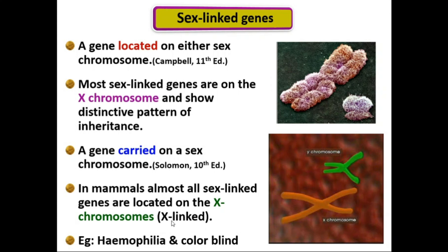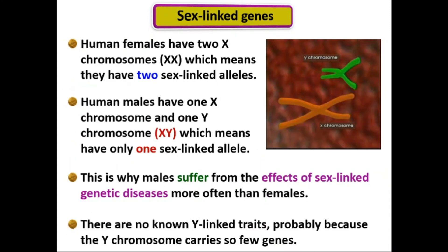Two genetic conditions that serve as examples of sex-linked genes are hemophilia and colorblindness. When discussing sex-linked genes, we compare males and females. Human females have two X chromosomes, meaning they have two sex-linked alleles. Human males have one X and one Y chromosome, meaning they have only one sex-linked allele.